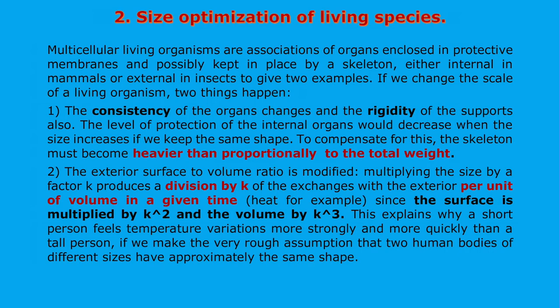Point two: size optimization of living species. Multicellular living organisms are associations of organs enclosed in protective membranes and possibly kept in place by a skeleton — either internal in mammals or external in insects. If we change the scale of a living organism, two things happen: first, the consistency of the organs changes, and the rigidity of the support also changes. The level of protection of the internal organs would decrease when the size increases if we keep the same shape. To compensate, the skeleton must become heavier than proportionally to the total weight.